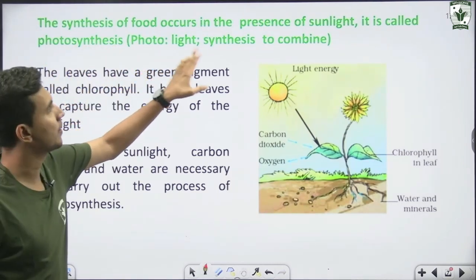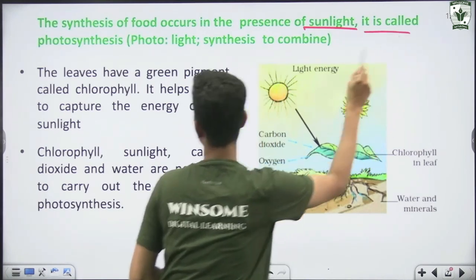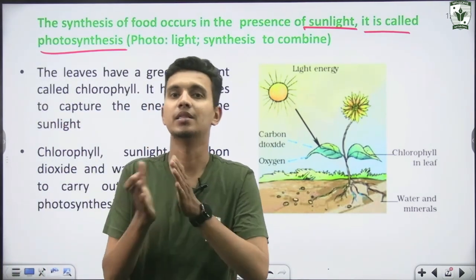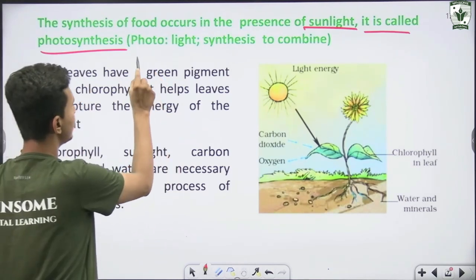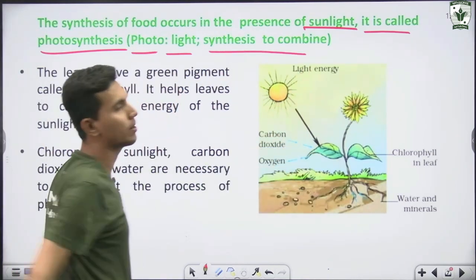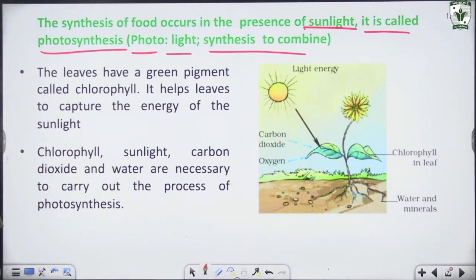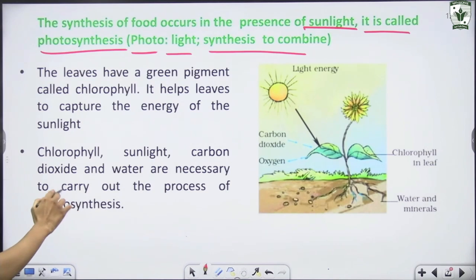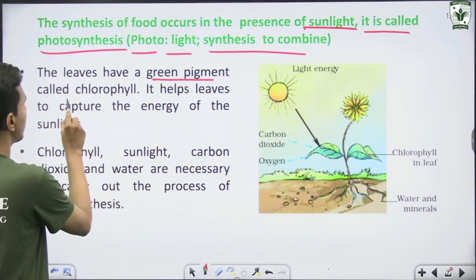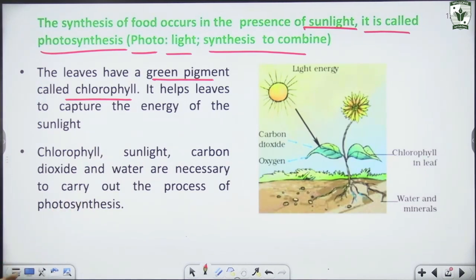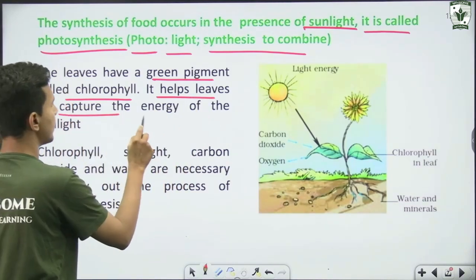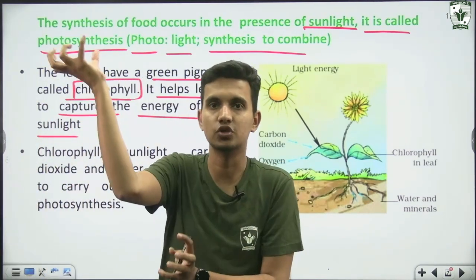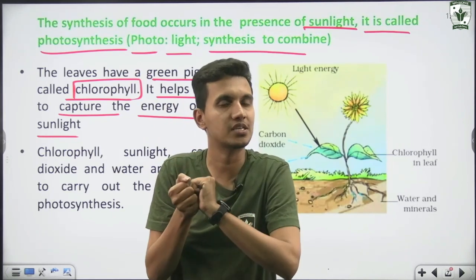The synthesis of food occurs in the presence of sunlight — this process is called photosynthesis. Photosynthesis is a process in which plants synthesize food in the presence of sunlight. 'Photo' means light and 'synthesis' means to combine. Chlorophyll helps leaves to capture the energy of sunlight, which is then used to make food.